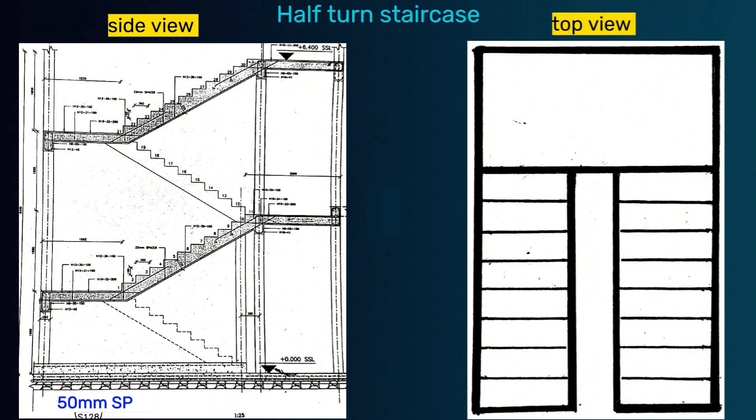We use spacers or concrete covers of 50 millimeters everywhere below the ground and then 25 millimeters everywhere above the ground. This is the riser, this is the going, this is the waist, and this is the landing.